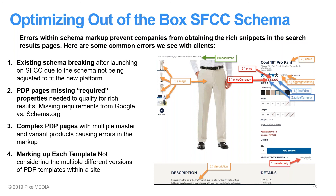Number four: marking up each template. A lot of times our clients are dealing with large catalogs with many different product types. Sometimes the products require a simple landing page template; sometimes it needs to be more complex, like the example here. It's important that you mark up each landing page with the correct schema markup so that all of your products can qualify for the rich results.